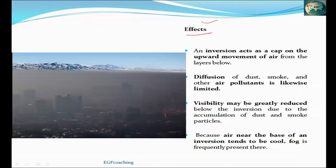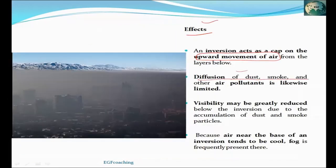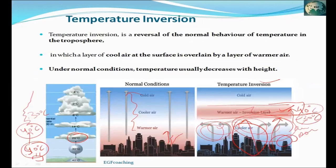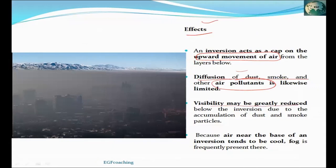During inversion, turbulence is suppressed and there is no vertical mixing of air. As a result, diffusion of dust, smoke, and air pollutants is inhibited — they do not disperse. Pollutants accumulate in the lower layer, creating foggy conditions that can significantly reduce visibility.